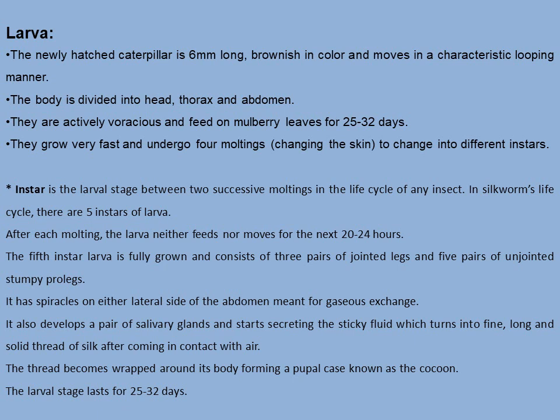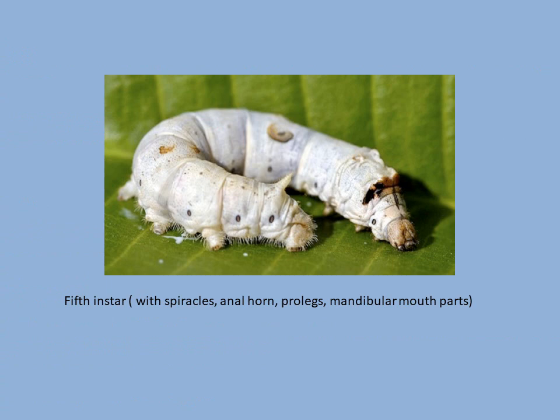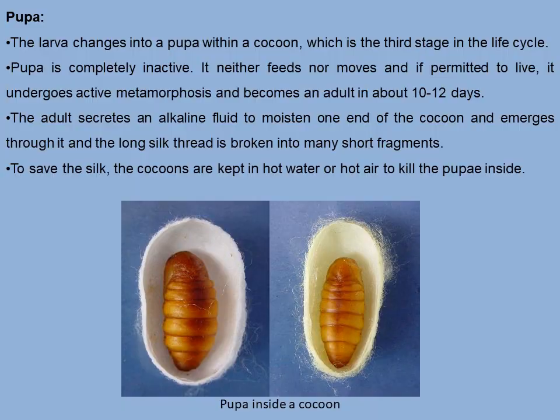In the silkworm's life cycle there are five instars of larvae. After each molting, the larva neither feeds nor moves for the next 20 to 24 hours. The fifth instar larva is fully grown and consists of three pairs of jointed legs and five pairs of unjointed stumpy prolegs. It has spiracles on either lateral side of the abdomen for gaseous exchange. It also develops a pair of salivary glands and starts secreting a sticky fluid that turns into a fine, long, solid thread of silk upon contact with air, wrapping around its body to form the cocoon. The larval stage lasts 25 to 30 days.